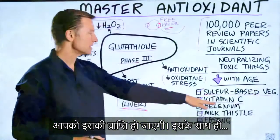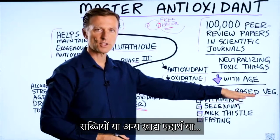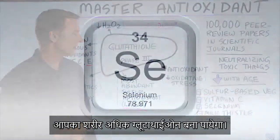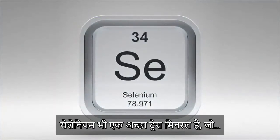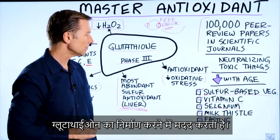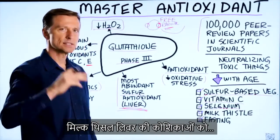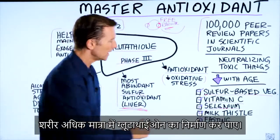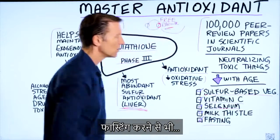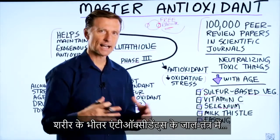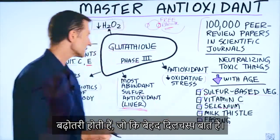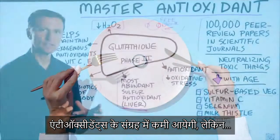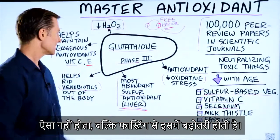Getting enough vitamin C from vegetables will also help you make more glutathione. Selenium is a good trace mineral to help build up glutathione as well. Milk thistle strengthens the liver cell so your body can make more glutathione. And fasting will actually increase the network of antioxidants in the body — you would think not eating would shrink the antioxidant pool, but it does just the reverse.